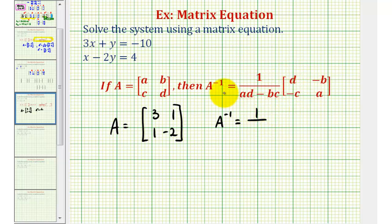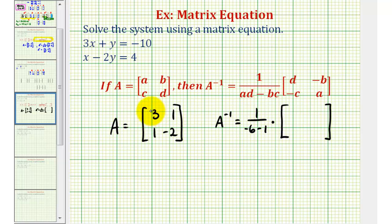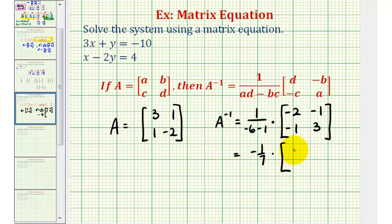So we'll have one divided by A times D minus B times C times this two by two matrix. In our case, we'll have one divided by three times negative two — that's negative six — minus one times one, which is one, times the two by two matrix. We'll switch the position of the three and the negative two, and we'll change the sign of the other two elements so they'll both be negative. This gives us one divided by negative seven, or negative one-seventh times our two by two matrix.